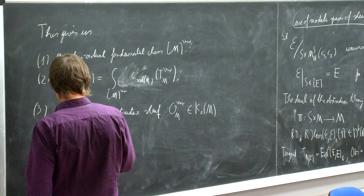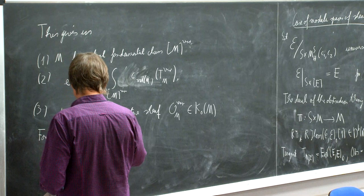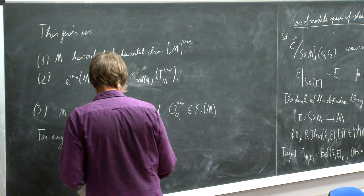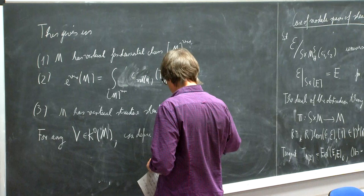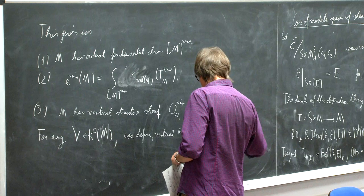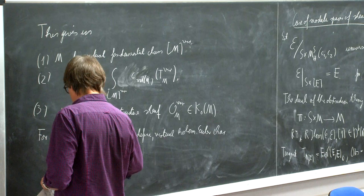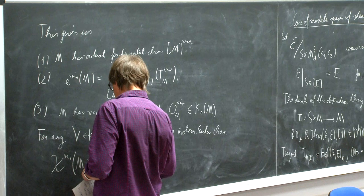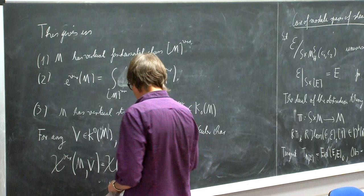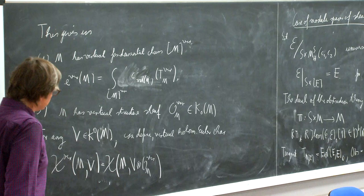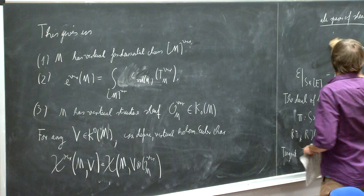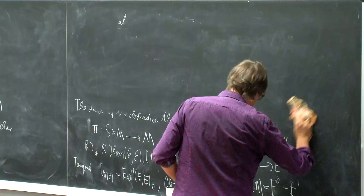The virtual holomorphic Euler characteristic chi(M, V) is just the holomorphic Euler characteristic — the alternating sum of sheaf cohomologies over M — of V tensor the virtual structure sheaf. One nice property that this has, which one wants to use for these things, is that we have the analog of the usual Riemann-Roch theorem: the virtual Riemann-Roch.